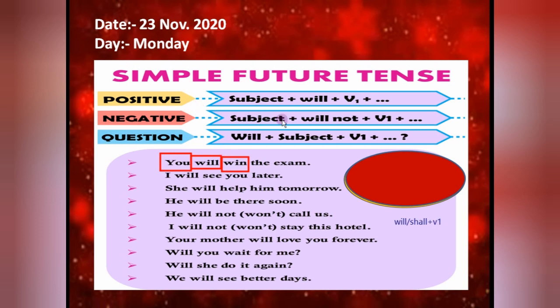For the negative one, simply you have to put 'not' after the helping verb. So what is the helping verb here? Will. So after this we have to put 'not'. The example is: 'He will not call us.' When we put will and not together, then the word will be 'won't'. So 'he will not call us' or 'he won't call us' — same. 'I will not stay at this hotel' — well, 'I won't stay at this hotel.' Students, don't forget: some students think that 'will' is the negative word of 'will' — no, the word is 'won't'.